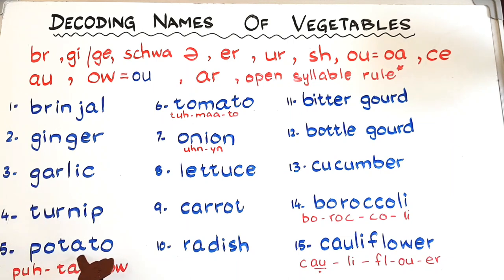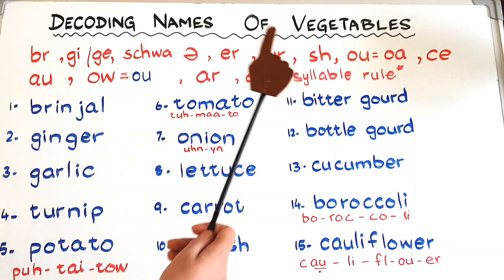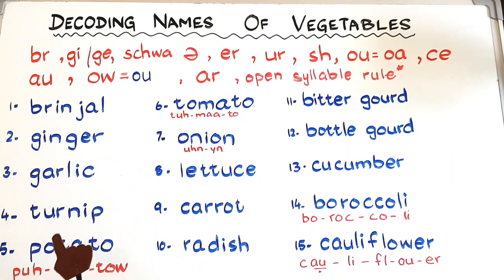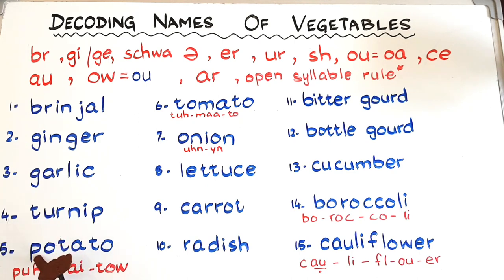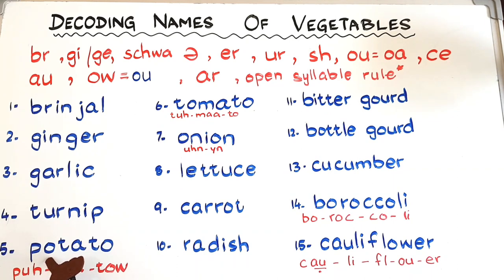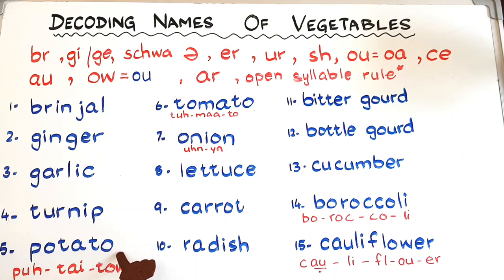Before I tell you the spelling of potato, you should know what the open syllable rule is. The open syllable rule states that when a syllable ends at a vowel, the vowel says its name. Like here: P and O — it's not 'puh-o', it's 'poh'. Then T-A-T, then T-O: 'to'. So you get 'poh-ta-toh'.